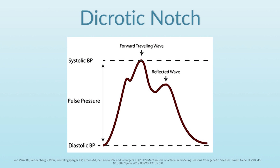The other thing people talk about when looking at A-line traces is the dicrotic notch, which is a notch on the descending limb of the A-line trace. Oftentimes people say this corresponds to aortic valve closure, but the dicrotic notch is not actually aortic valve closure. What it is is a reflection of the reflected wave from the periphery being seen on the arterial trace.